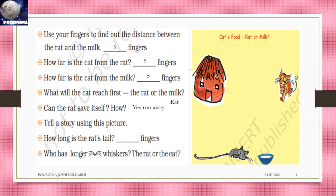What will the cat reach first, the rat or the milk? Rat. Can the rat save itself? How? Yes, run away. Tell the story using this picture. Cat is there, hut is there. Cat is trying to catch the rat. How long is the rat's tail? Two fingers. Who has longer whiskers, the rat or the cat? Cat.